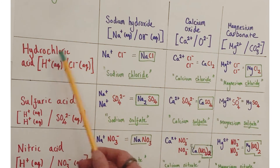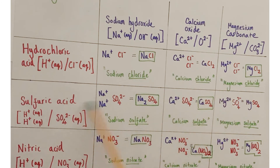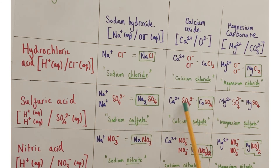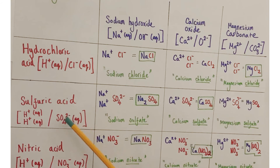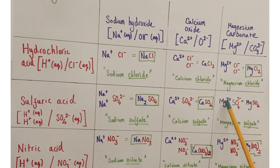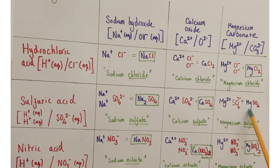Moving to sulfuric acid reactions: sodium (Na⁺, +1) with sulfate (SO4²⁻, −2) requires two sodiums to every one sulfate, giving Na2SO4 — sodium sulfate. Calcium sulfate: Ca²⁺ (+2) balances perfectly with SO4²⁻ (−2) in a 1:1 ratio — formula CaSO4. Magnesium sulfate: Mg²⁺ (+2) is also perfectly balanced by SO4²⁻ (−2) in a 1:1 ratio — formula MgSO4, magnesium sulfate.